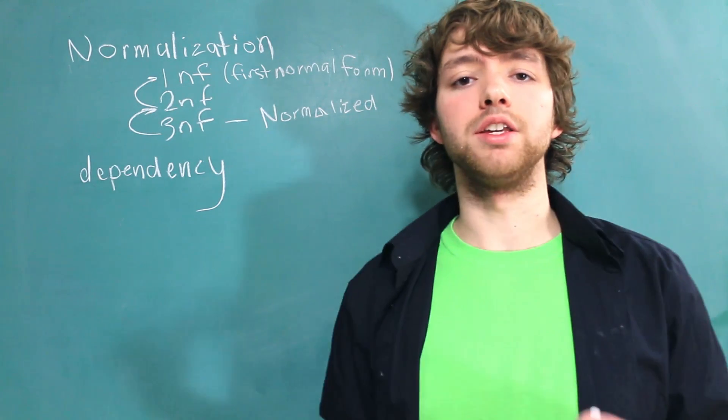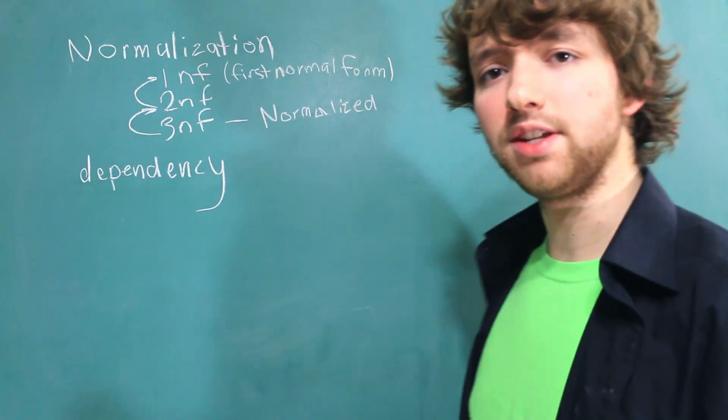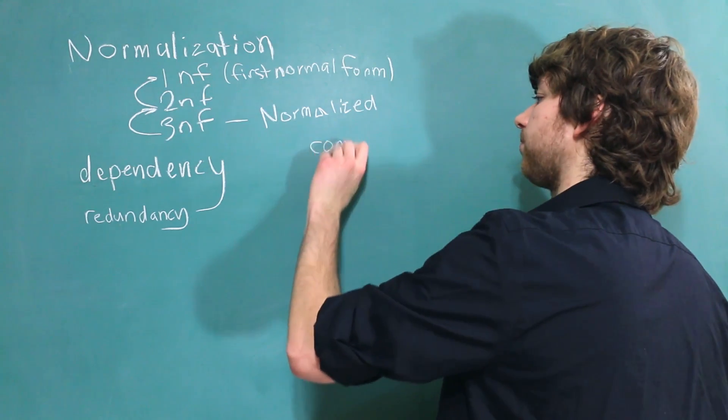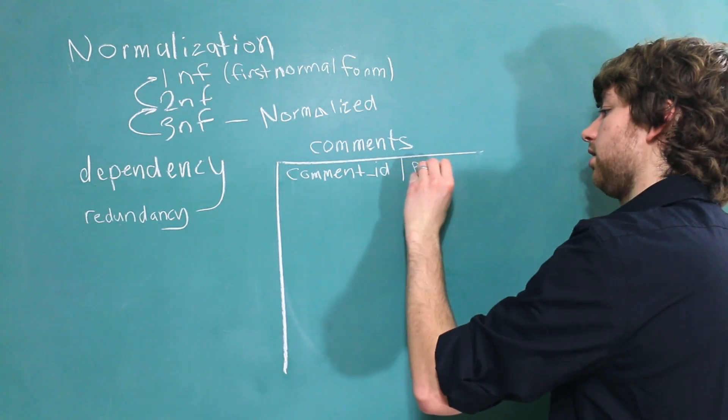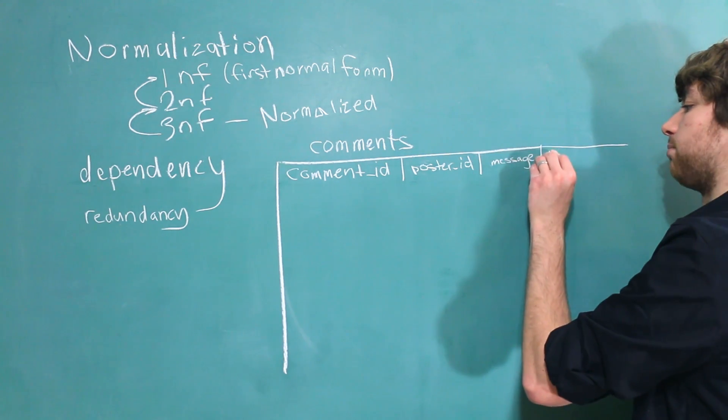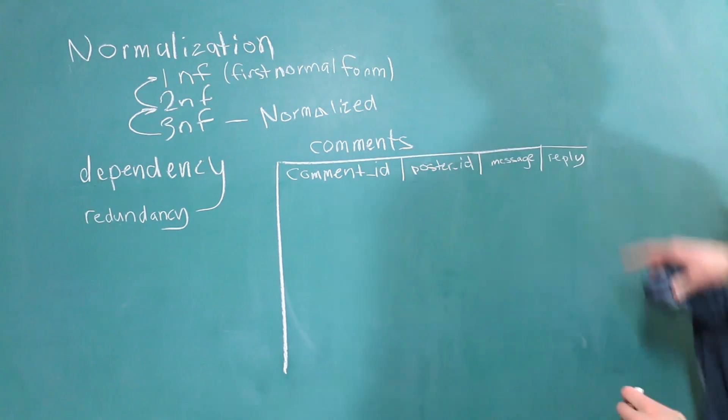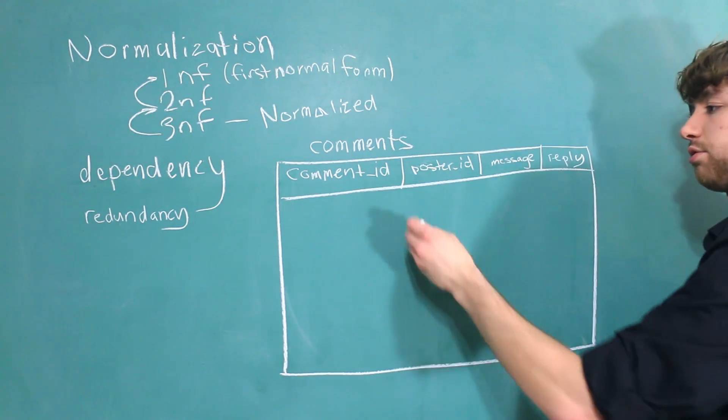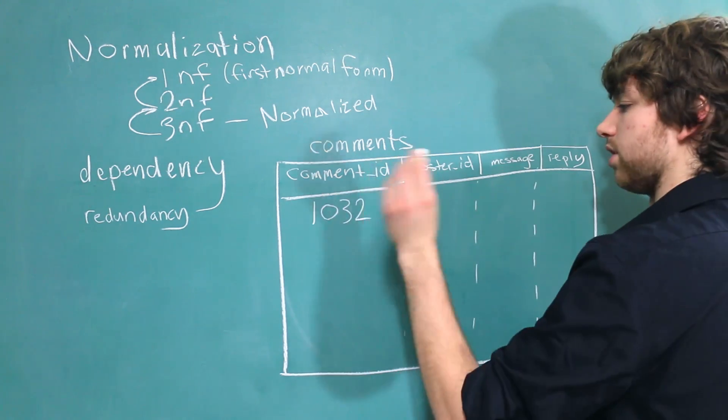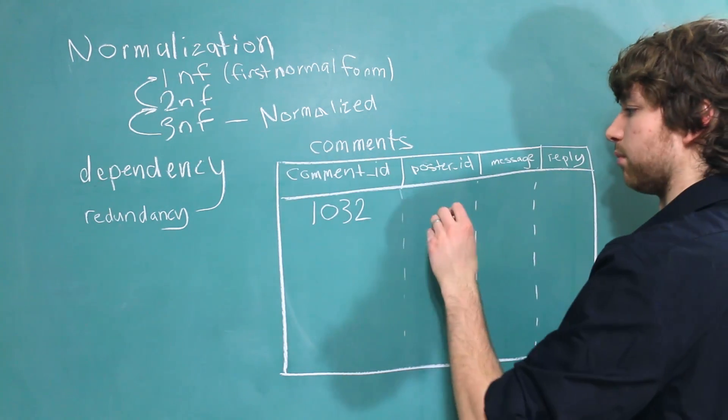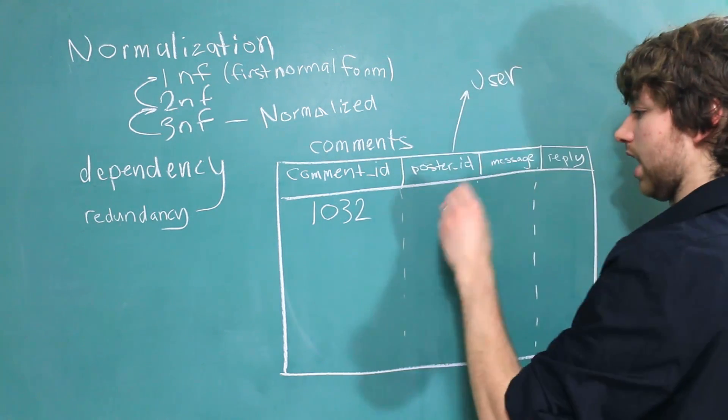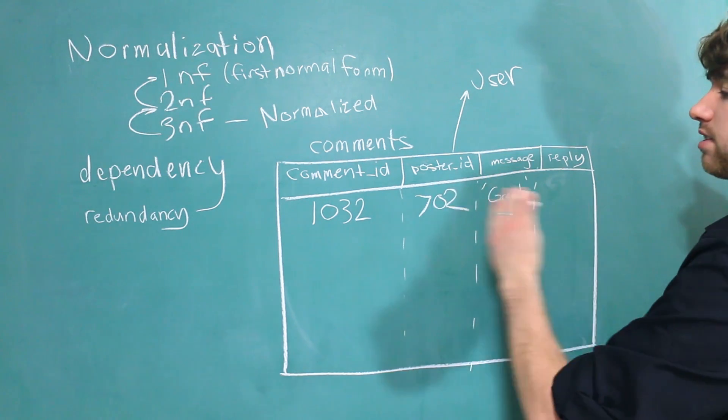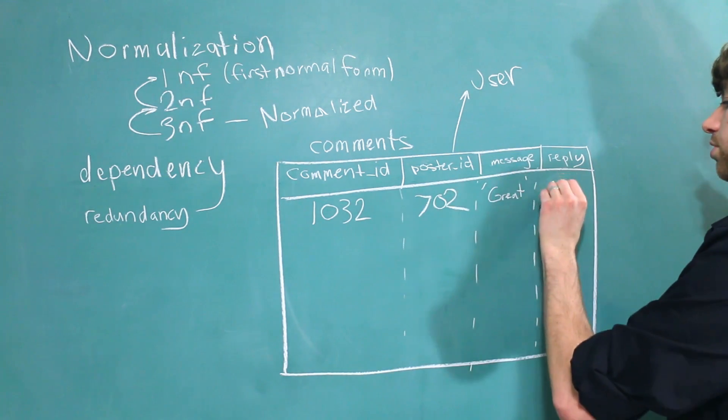The primary way they help us is by getting rid of redundancy. Redundancy is when we have something in a database more than once. For example, if we have a comments table, we might have a comment ID, poster ID, the actual message, and if applicable, any replies. So we'll store one reply in here. Now this is not the best way to design a table and you'll see why in just a moment. Let's go through some example data. So the comment has the ID of 1032, just some random number, and this points back to a user with the ID of 702 for example. And the message can be anything. And this is the original comment therefore it's not a reply so we'll just say null.